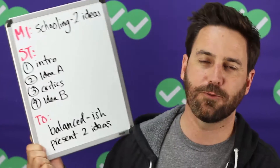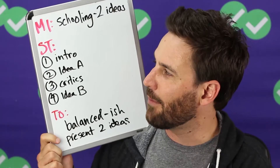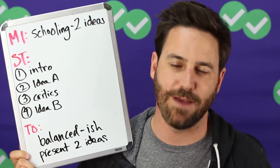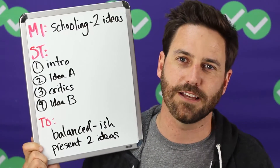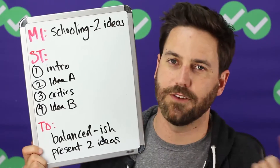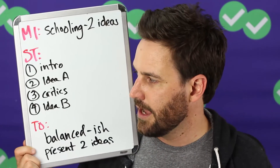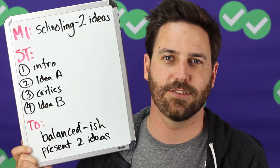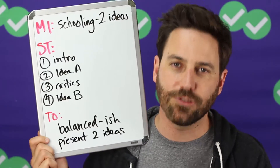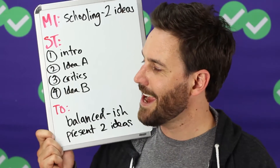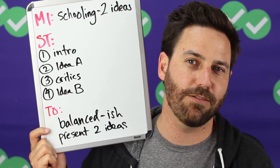In a previous video we went through the passage and attacked the passage. As a refresher, I wrote down the main idea, structure, and tone here. The main idea is the passage is about two ideas or two theories of schooling. The structure: first paragraph is the introduction, second paragraph is about theory A. Paragraph three is about the critics of theory A and then introduces theory B, which talks about the confusion effect.